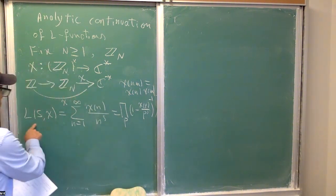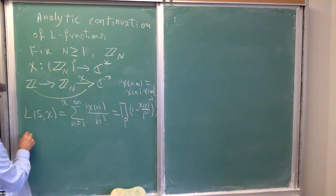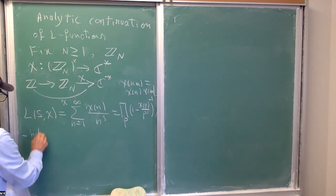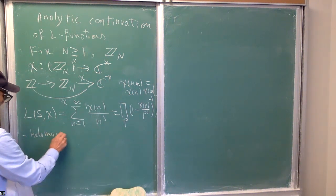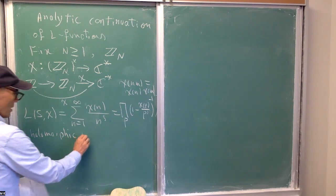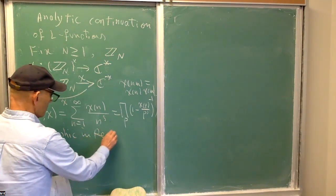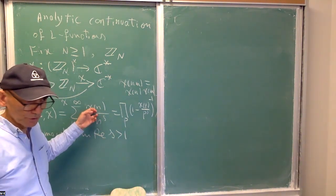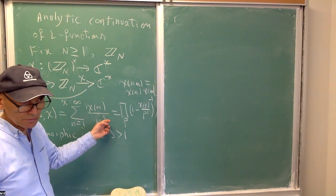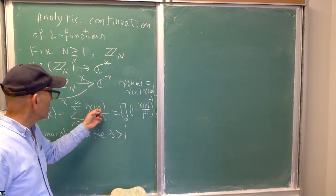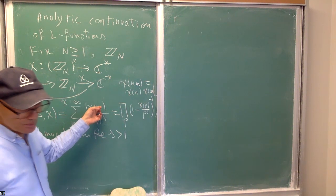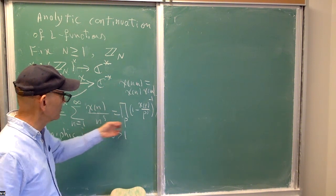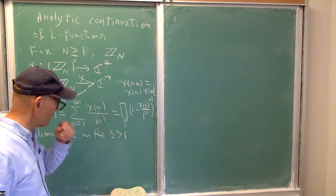This function, as we observed already a long time ago, is obviously holomorphic for Re(s) > 1. In general, it doesn't require Re(s) much bigger than one, simply because chi is a bounded function — the absolute value of chi is less than or equal to one, it's either zero or one. So this is majorized by Riemann's zeta function in absolute value, and is holomorphic there.